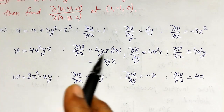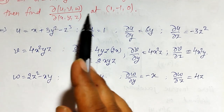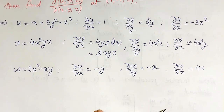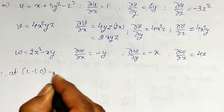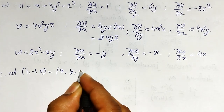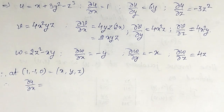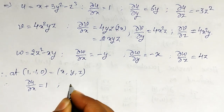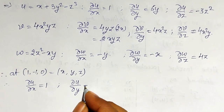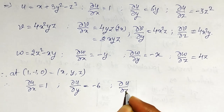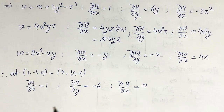I will now evaluate these partial derivatives at the point (1, -1, 0), since I want to find the Jacobian at this point. So x = 1, y = -1, z = 0. At this point: ∂u/∂x = 1 (constant). ∂u/∂y = 6y = 6(-1) = -6. ∂u/∂z = -3z squared = -3(0) = 0.